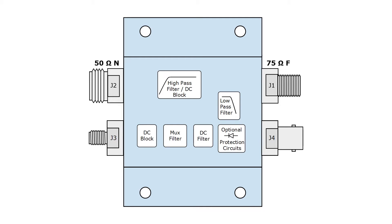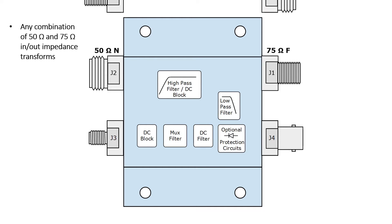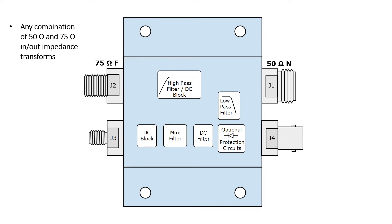In addition, the Orbital MUX-T also performs impedance transforms depending on the connectors used. It provides for any combination of 50 ohm and 75 ohm in or out impedance transforms. For example, 50 ohm N at J1 to 75 ohm F at J2.